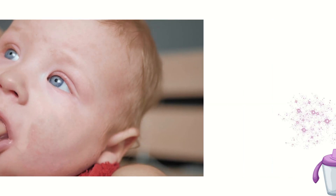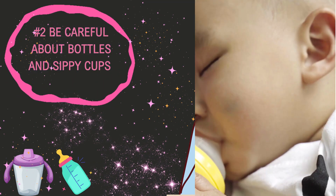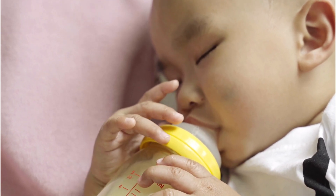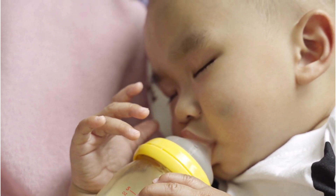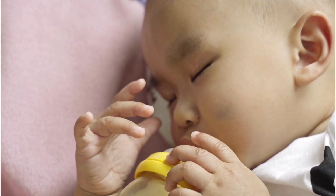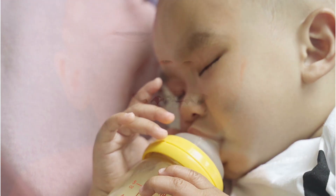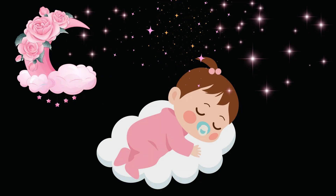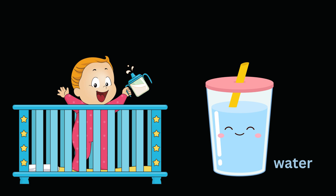Number two: be careful about putting your child to sleep with a bottle or sippy cup in the mouth. Children suck more slowly as they fall asleep and the content of the bottle stays stagnant in their mouth. The prolonged exposure to baby formula, milk, or juice causes quick and severe decay of the front teeth. You can use a pacifier instead to soothe the child, and if you still prefer a bottle, fill it up with plain water instead.